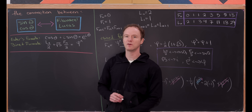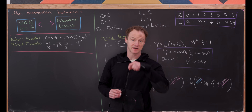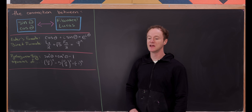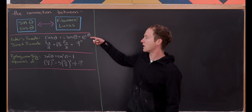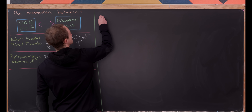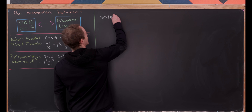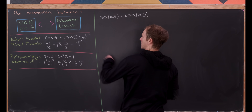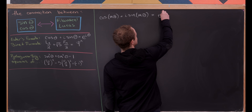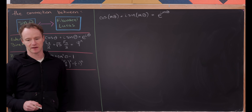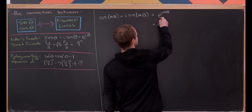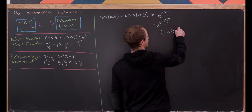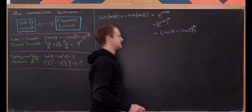We've already forged two bridges between these two pairs of objects, and now we'll do one more starting on the trig side with Euler's formula. Let's look at cos(mθ) + i sin(mθ). Using Euler's formula that's e^(imθ), and by exponent rules that's (e^(iθ))^m. Using Euler's formula on the inside, that equals (cos θ + i sin θ)^m.